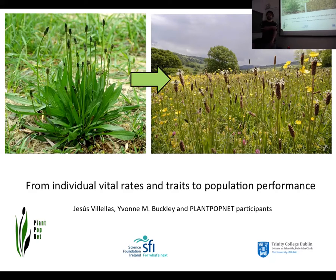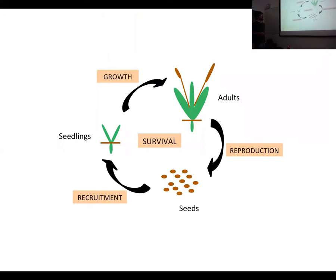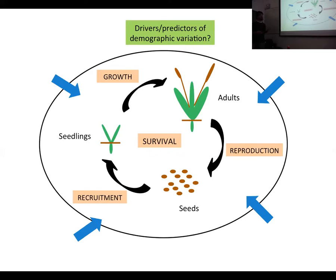Here we can see a representation of the life cycle, showing all the different stages: seedlings, adults, seeds, and the transitions between stages — growth, reproduction, recruitment, and survival. The idea in this study would be to find the drivers of demographic variation, which are the predictors of variation in demographic rates for Plantago lanceolata, and of course of population growth rates.